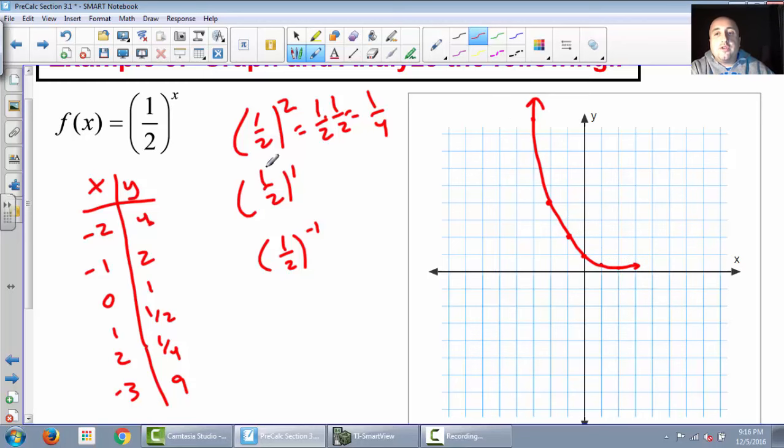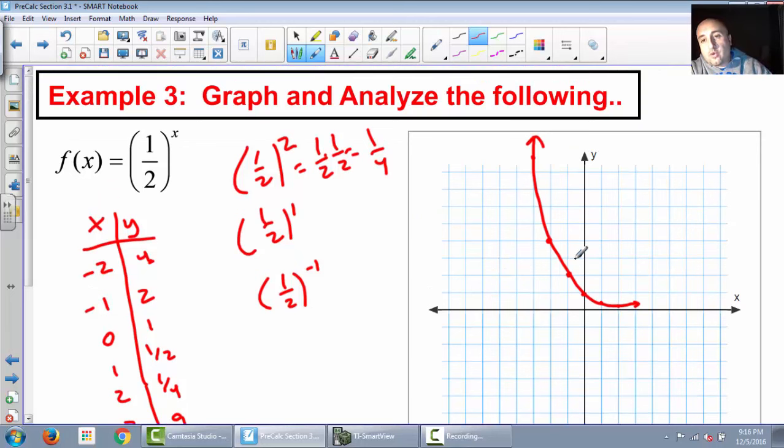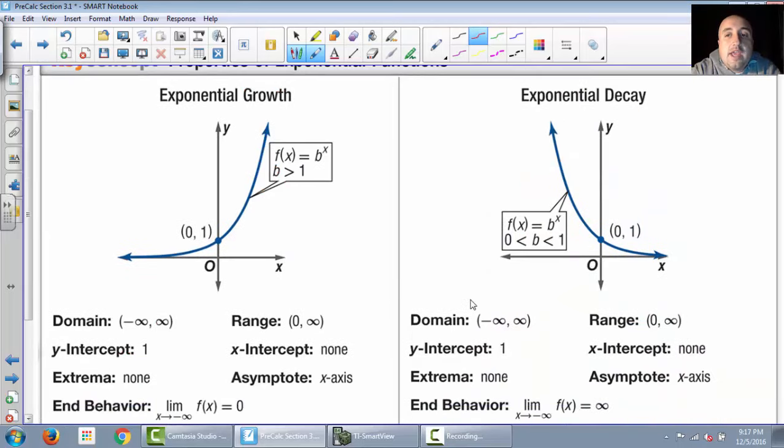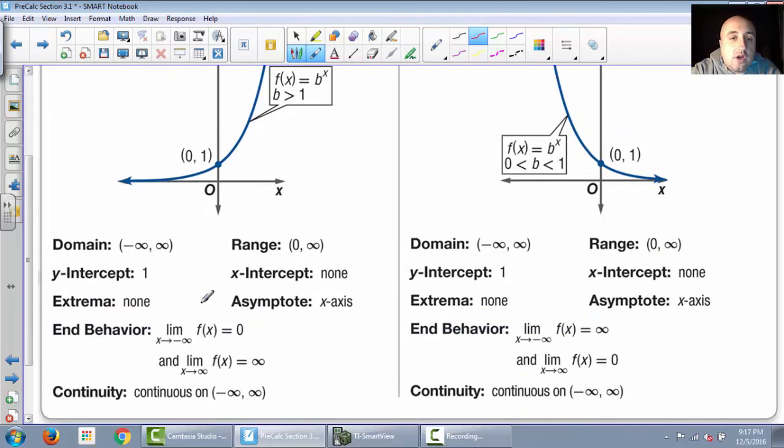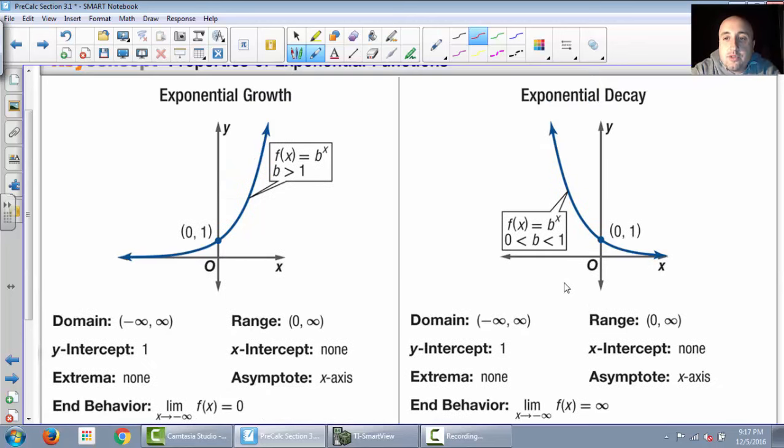Once again, we have a horizontal asymptote here. This one is called, instead of a growth from left to right, what does this one do? From left to right, it's going down. So this one's actually called a decay or an exponential decay. So those are the two types: exponential growth, which goes up, exponential decay goes down. And on the next page, you have a chart here that tells you all about this exponential growth from left to right goes up, exponential decay goes down. And then all those different things we've talked about, domain, range, y-intercept, x-intercepts, asymptotes, end-behavior, all of those things can be found right on this chart. So use that to help you with some of the homework problems.